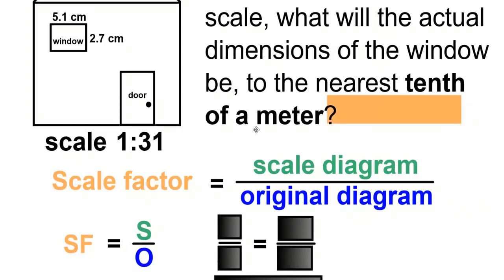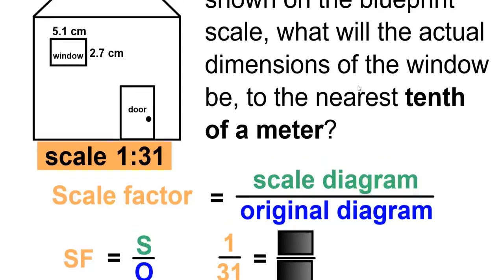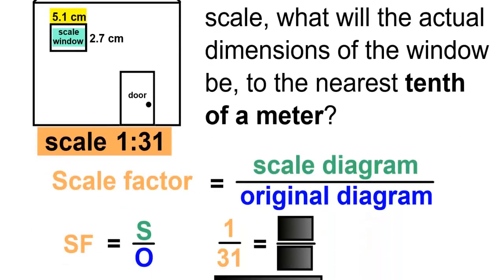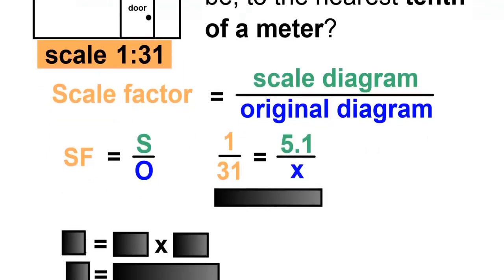We'll start with the scale factor. This has a ratio of 1 to 31, so we can write this as 1 divided by 31. This is the blueprint scale, so this will be the scale window. We'll take one of the dimensions of the window — we'll start with the top, which is 5.1 centimeters. So for scale, we'll put 5.1 divided by the original, which is the unknown.